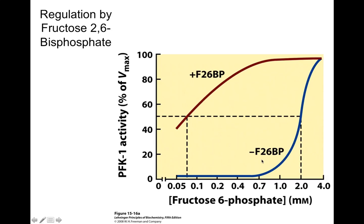If we don't have F2,6-BP, our PFK1 isn't working very well. Another way to put this is that if F2,6-BP is present, then we're going to go through glycolysis — this is an important enzyme of glycolysis.